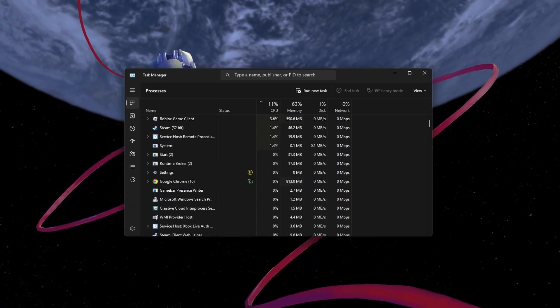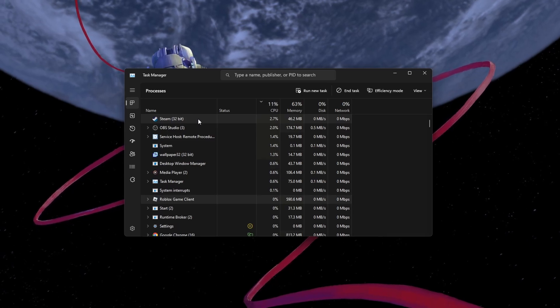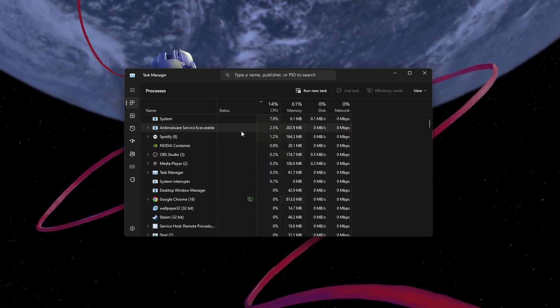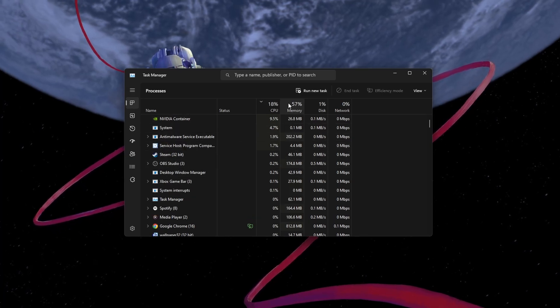First, open up your Task Manager in the Processes section and close all Roblox related processes, such as the game client or shaders and mods.